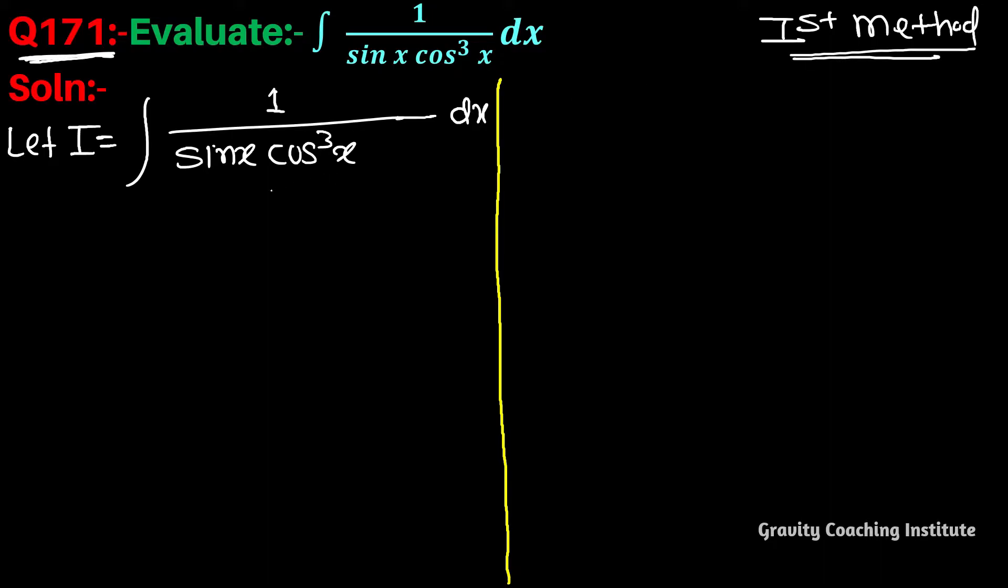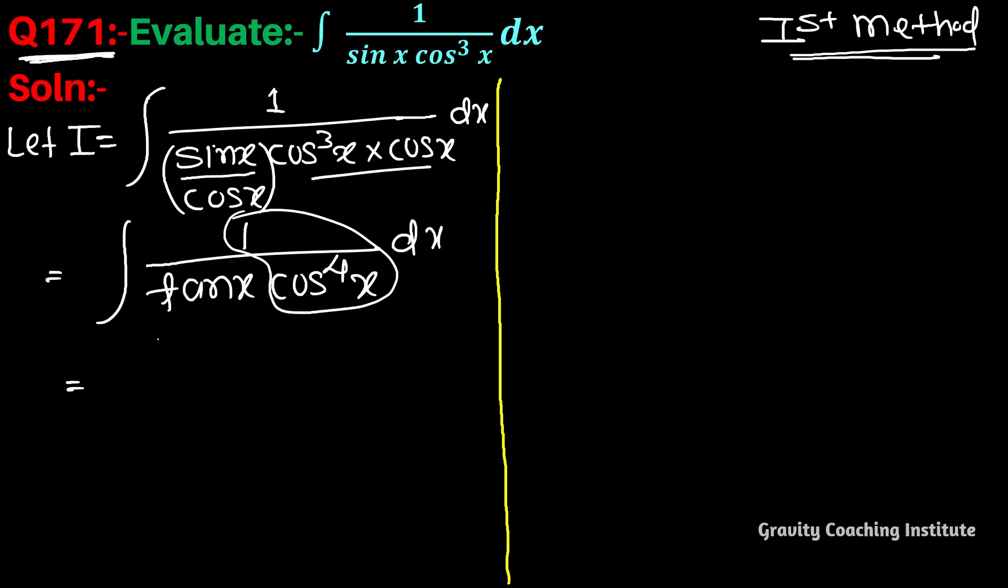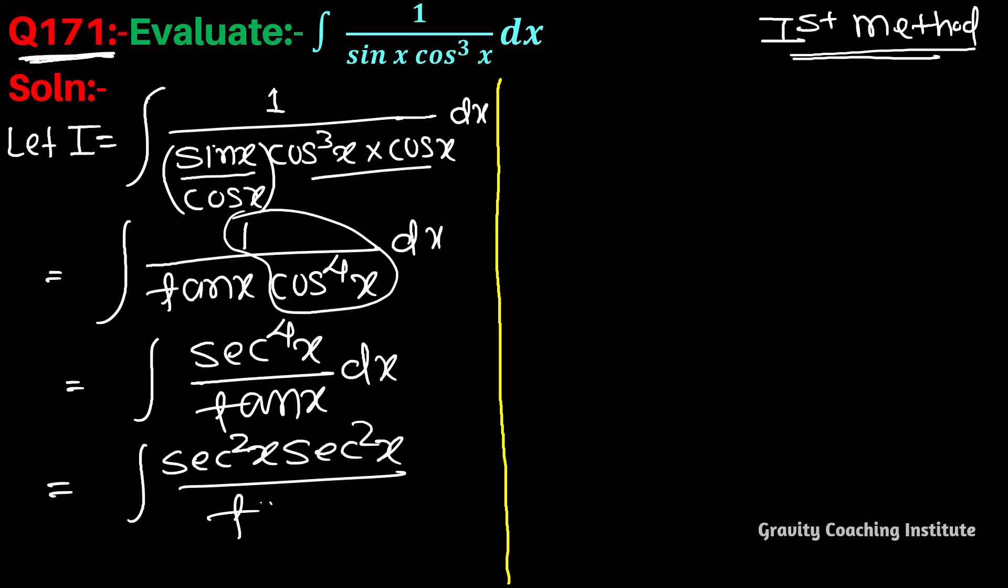We will solve using the first method. We will divide this: sin x into cos x into cos x, and rewrite as 1 by cos cube x, which equals sec cube x upon tan x dx, equal to integration sec squared x upon tan x dx.